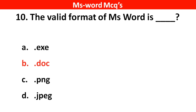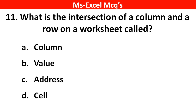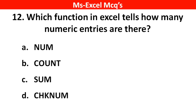Next question: What is the intersection of a column and a row on a worksheet called? Right answer is option D: Cell.